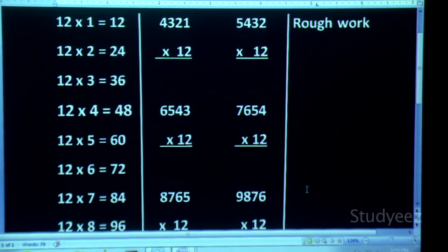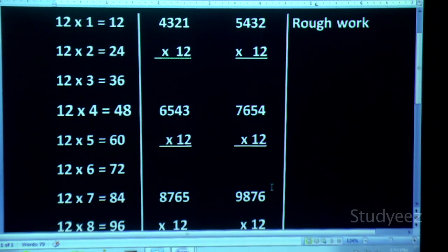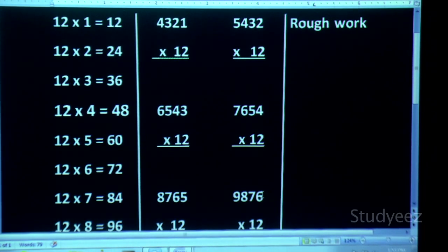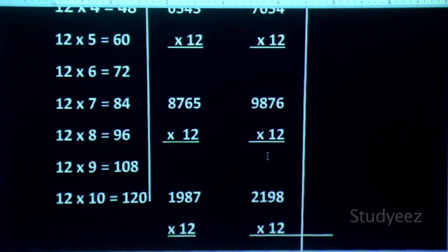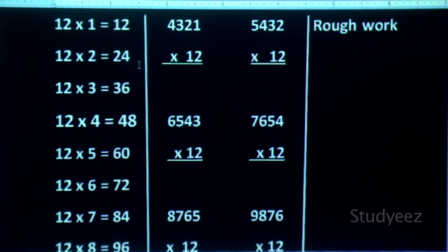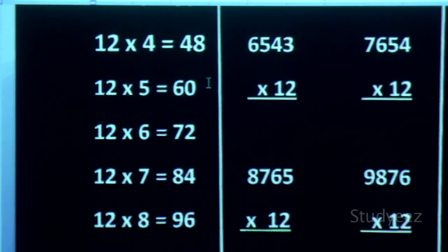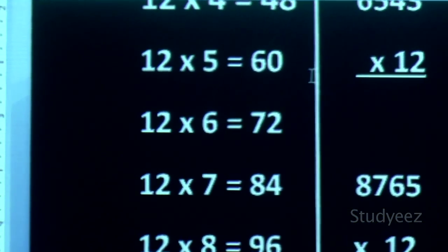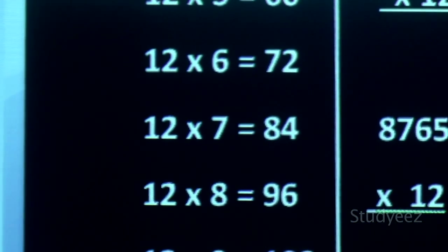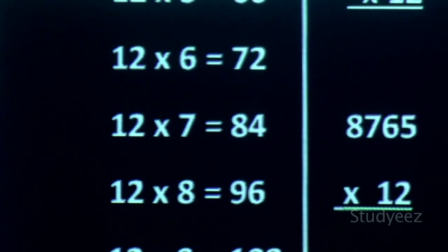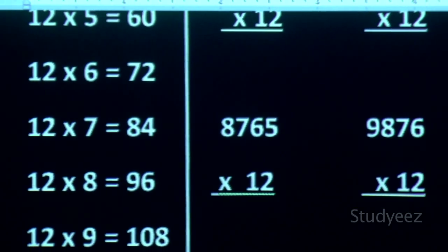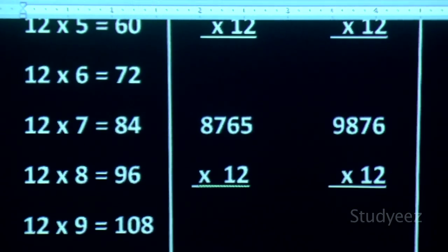Now I am taking the multiplication of 9, 8, 7, 6 by 12. What is 12×6? You go from the beginning: 12×1=12, 12×2=24, 12×3=36, 12×4=48, 12×5=60, 12×6=72. For 72, you put 2 here in the answer and take 7 as carry in the rough column.